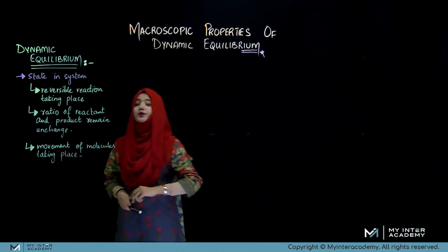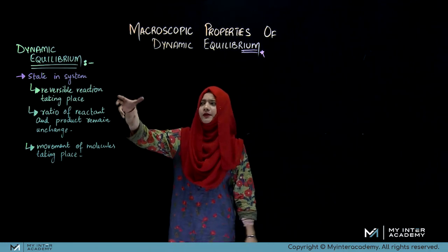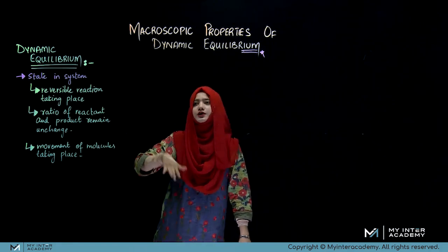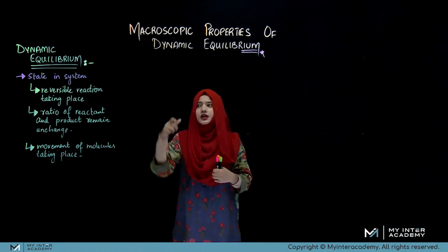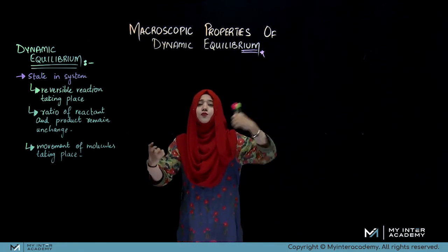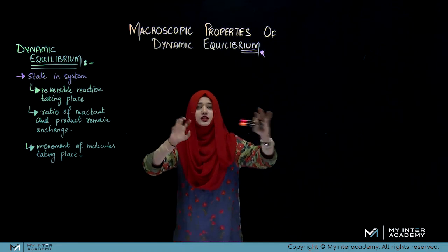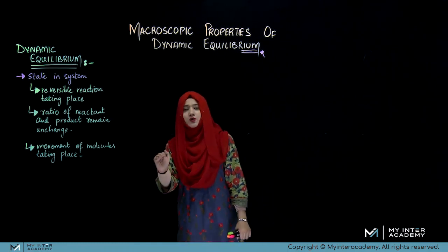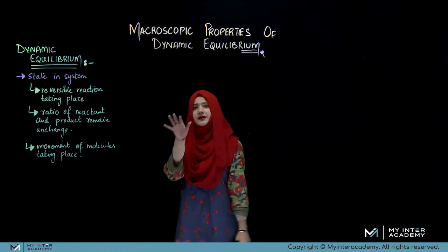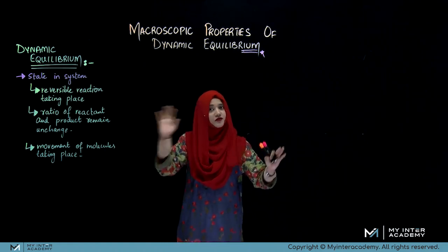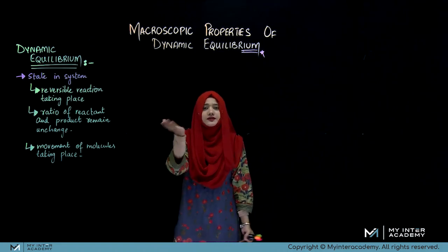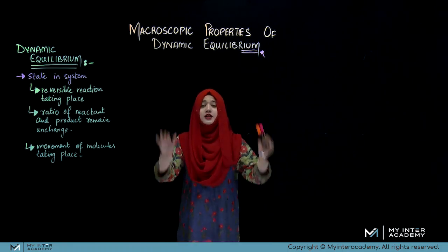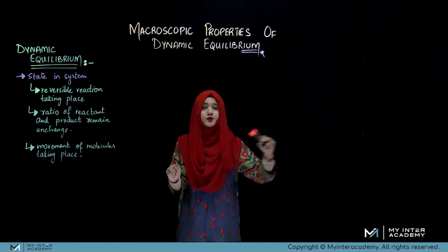In dynamic equilibrium, reversible reactions are occurring and we have products. So if reactants and products are present, we can say dynamic equilibrium is achieved. It doesn't depend on 20% or 100% — we can say it at any ratio of reactants and products.